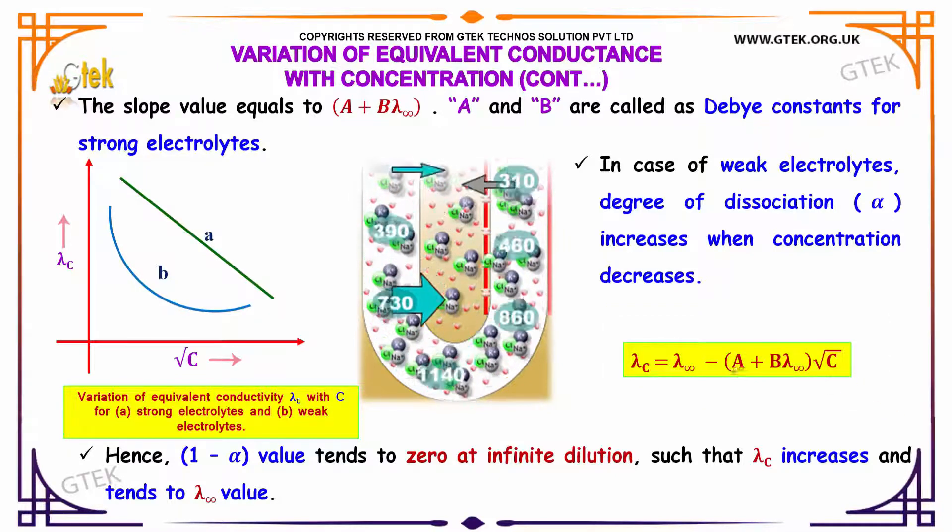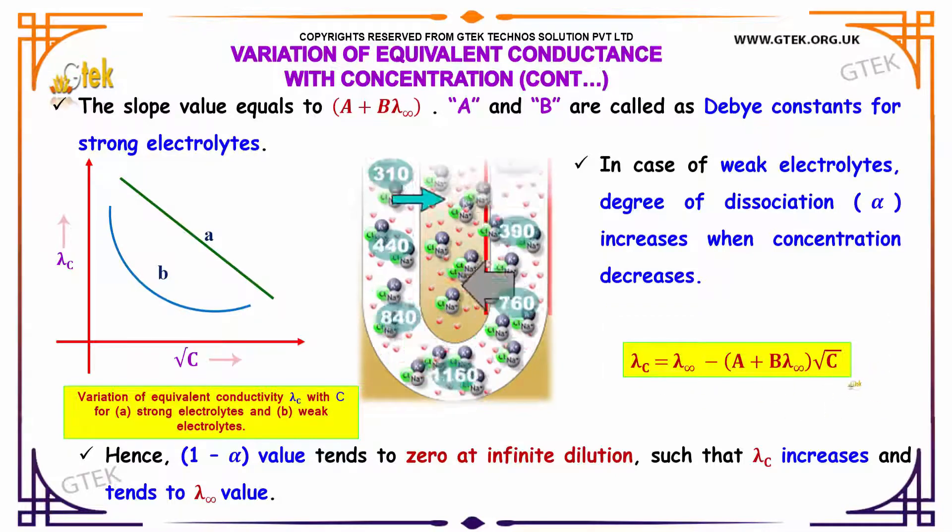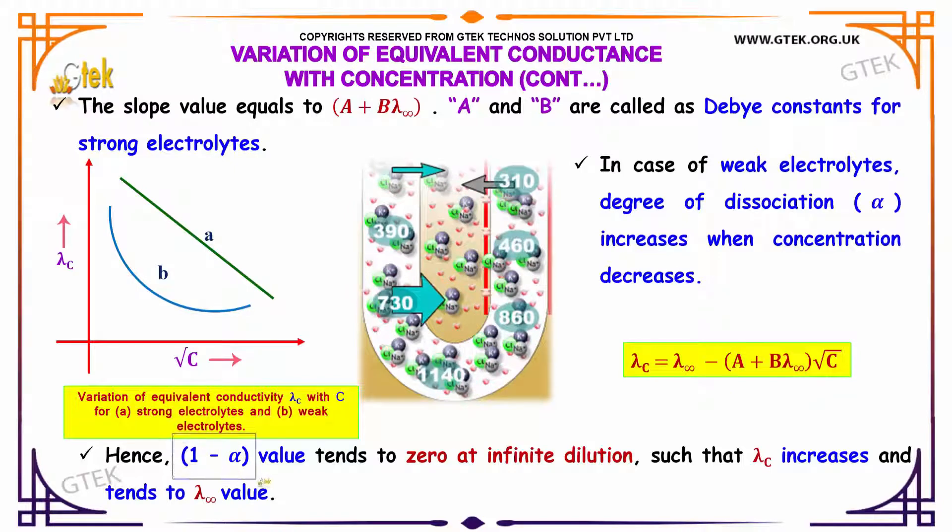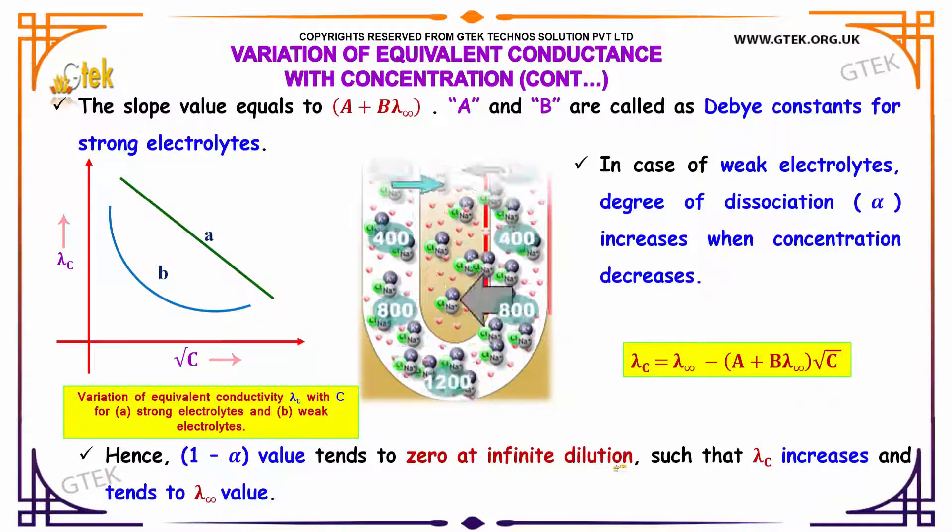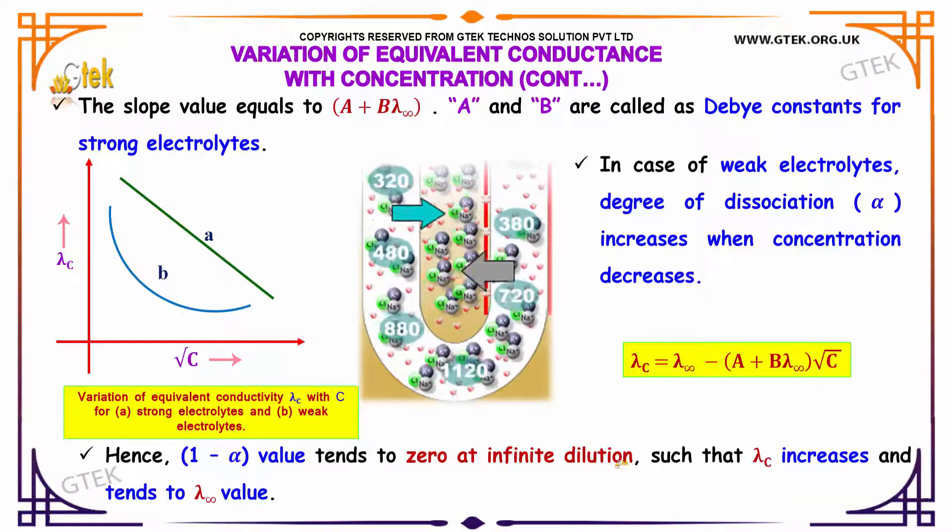Hence, 1 minus alpha value tends to 0 at infinite dilution, such that lambda c increases and tends to lambda infinity value.